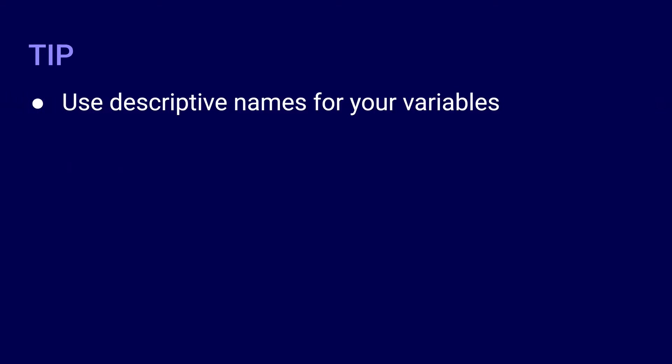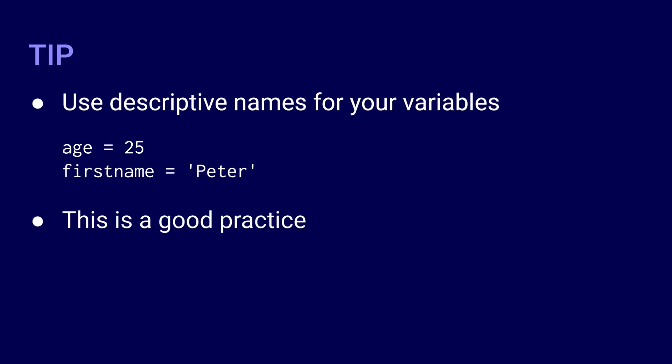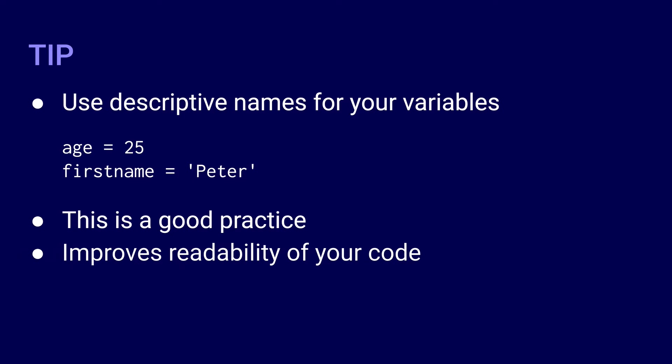When naming variables, it is good practice to use descriptive names. A descriptive variable name easily describes the value that is assigned to the variable. For example, if you want to create a variable for a person's age, then instead of using x, you can use age as the variable name — age equals 25, for example. If you need a variable for a person's first name, then consider using first_name as the variable name — first_name equals Peter, for example. Using descriptive names improves the readability of your code and makes it easier to understand.